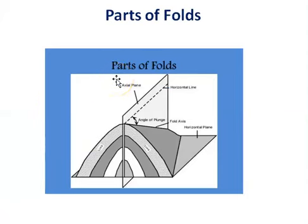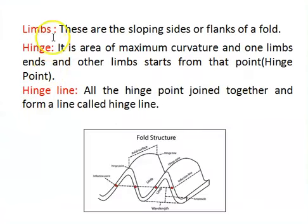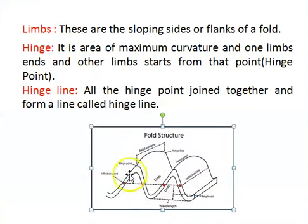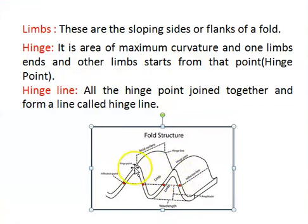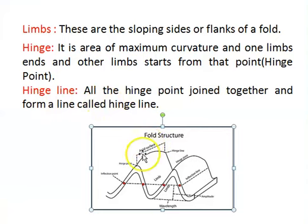Parts of folds: a number of terms are used to describe the shape of folds. Limbs are the sloping sides or flanks of folds. Hinge is the area of maximum curvature — the portion where one limb ends and the other limb starts, also known as the hinge point. Next is the hinge line — when strata occur in a thick way and all hinge points are joined together, they form a line known as the hinge line.